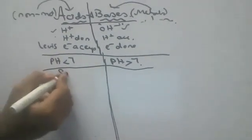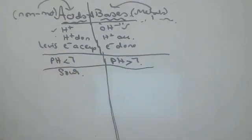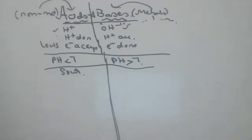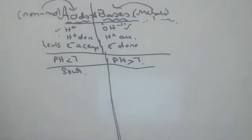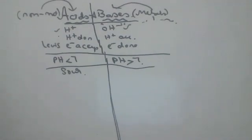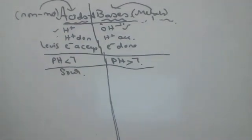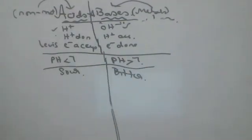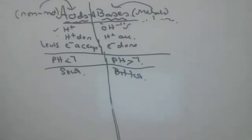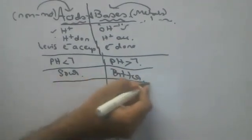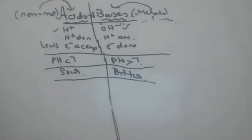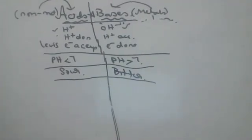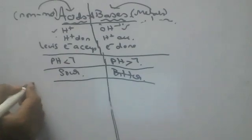Acids are sour — like lemon, mango, or sweet lime. Whichever substances are sour, they are acids. Whichever are bitter, they are bases. Like neem — if you've tasted neem, it is very bitter because it is a strong base.